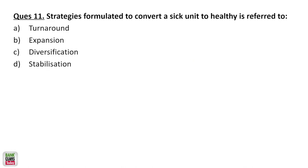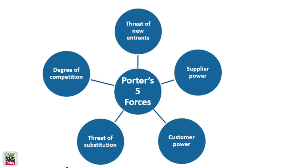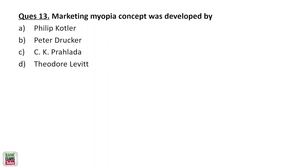Strategies formulated to convert a sick unit to a healthy one — that is a turnaround strategy, turning around the whole company to make it a profitable business from a sick unit. Which of the following is not included in Porter's Five Forces? Strategic planning is not included. The five forces are: degree of competition, threat of substitution, customer bargaining power, supplier bargaining power, and threat of new entrants.